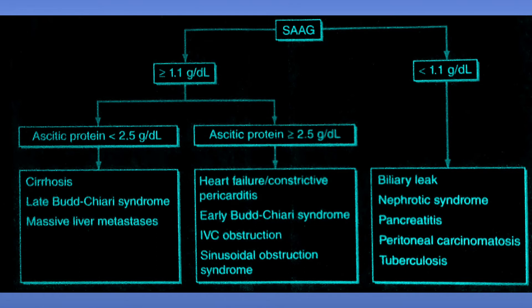If SAAG is less than 1.1, there are miscellaneous causes unrelated to portal hypertension, including biliary leak, nephrotic syndrome, pancreatitis, peritoneal carcinomatosis, and tuberculosis.